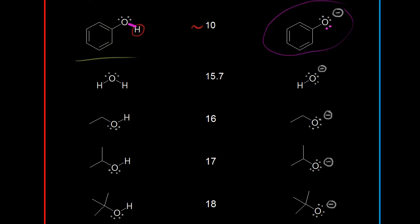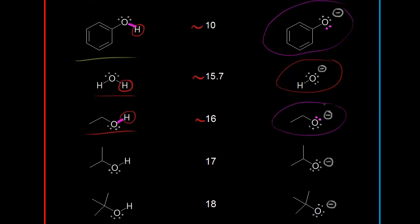Next we have water. The pKa for this proton on water is approximately 15.7, so the conjugate base to water would be hydroxide. Next we have ethanol. This is the acidic proton on ethanol, with a pKa value of approximately 16. The electrons in magenta here would end up on the oxygen, giving the oxygen a negative one formal charge — so this is the ethoxide anion.